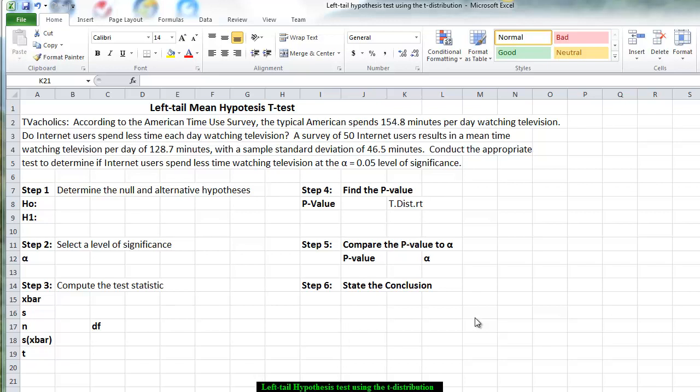What we want to do now is work on a left-tail t-test using the value given for the mean of a population. We're going to deal with it based upon a survey that was conducted about the time that Americans watched television. We call them TV-aholics.